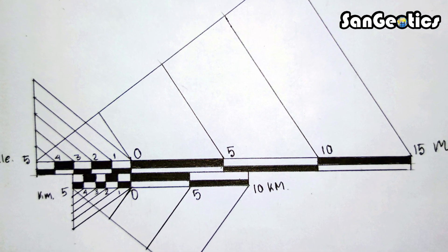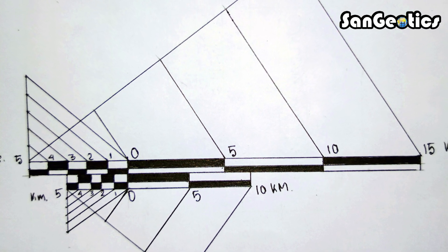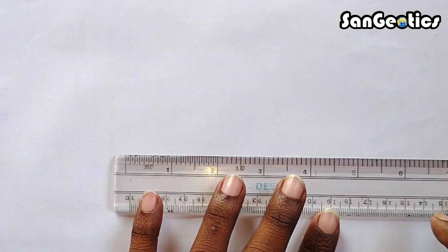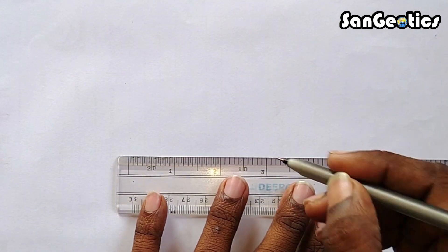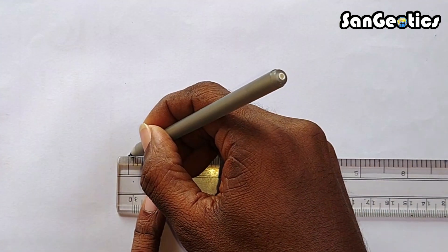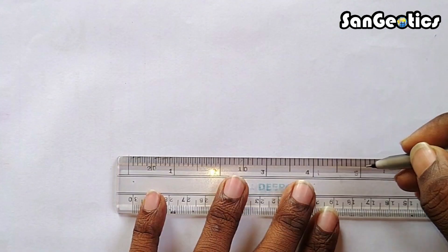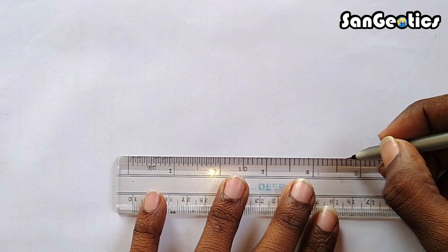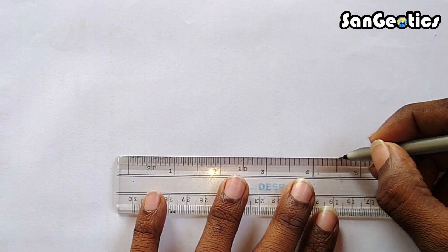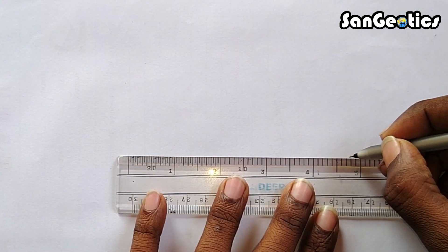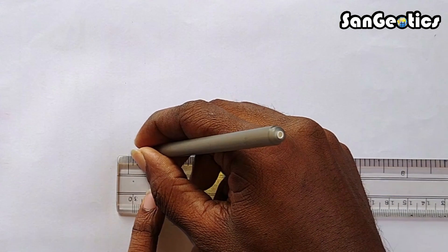Construction — Step 1: first, draw a 4.72-inch straight line. This is the total length of the scale, which was calculated in Step 3 of the calculation part.